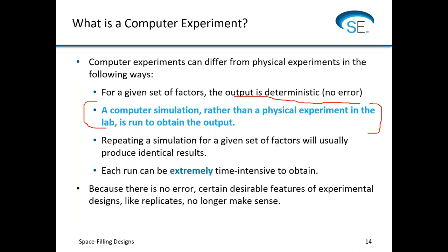Repeating a simulation for a certain set of input factors will usually produce identical results — the same out to many decimal places. In a simulation experiment, even though it's a computer doing the work, it can be extremely time-consuming to obtain a single run — we're talking hours, days, or even weeks. And because there is no error, certain features of experimental designs like replicates in central composite designs don't really make sense. If you do a replicate in a simulation experiment, you're generally going to get the same response, so it's a waste of time and resources.